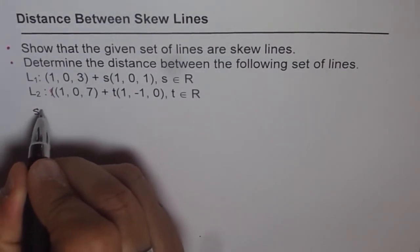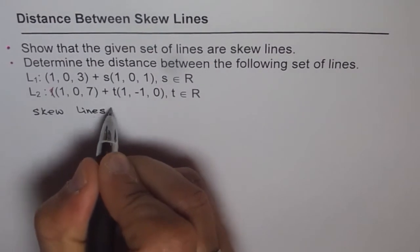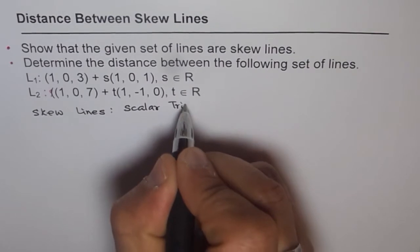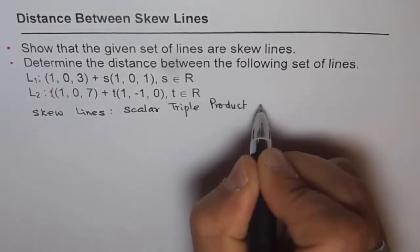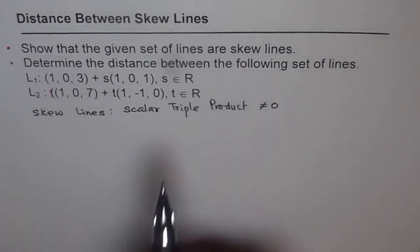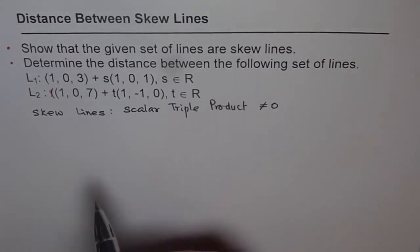When we say skew lines, we mean the scalar triple product is not equal to zero — that confirms the lines are skew lines. Some of you may not understand what scalar triple product means, so I will explain that now. And by explaining it, I will also get the answer for the question.